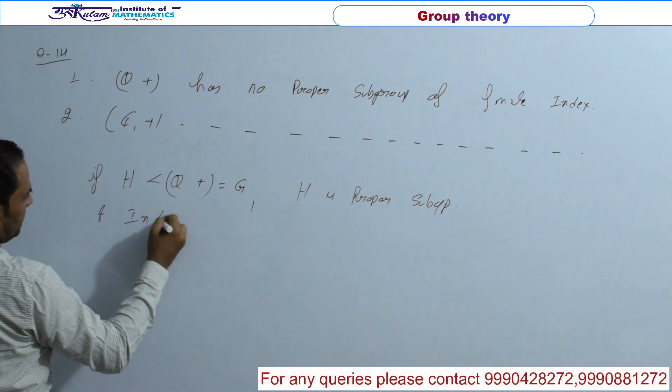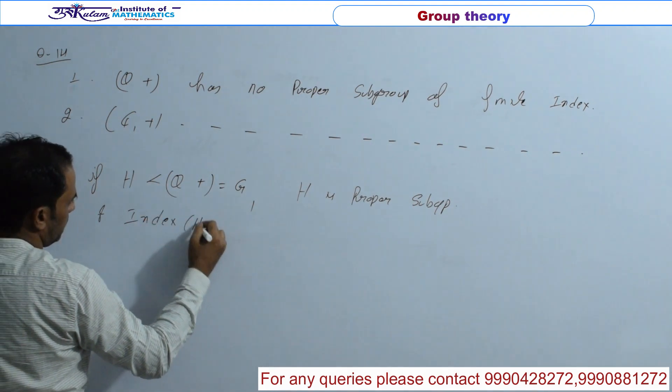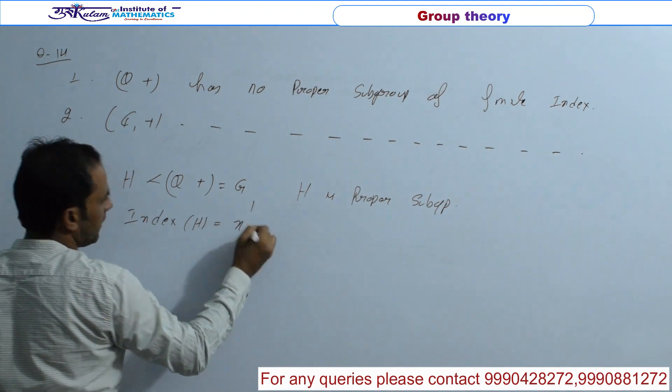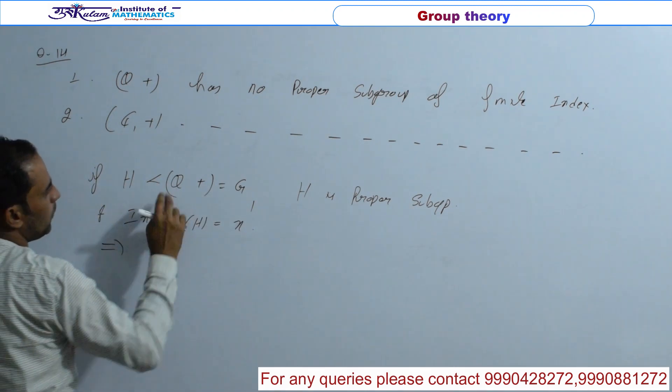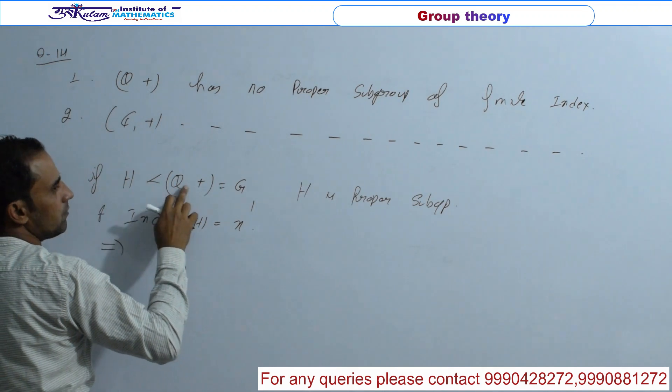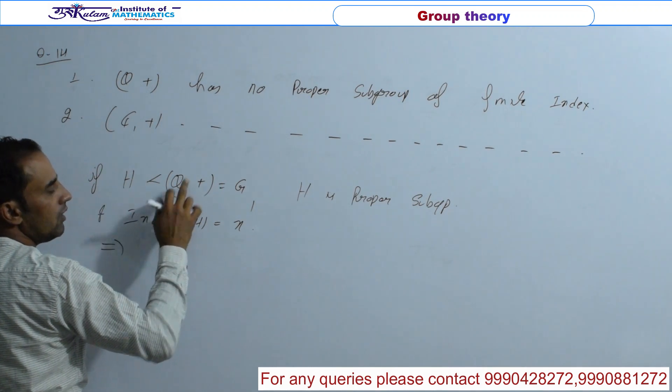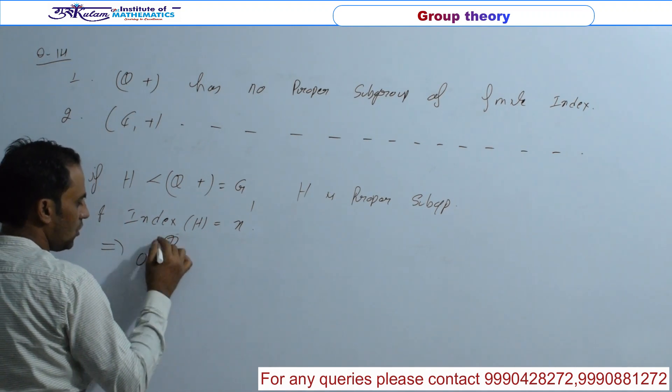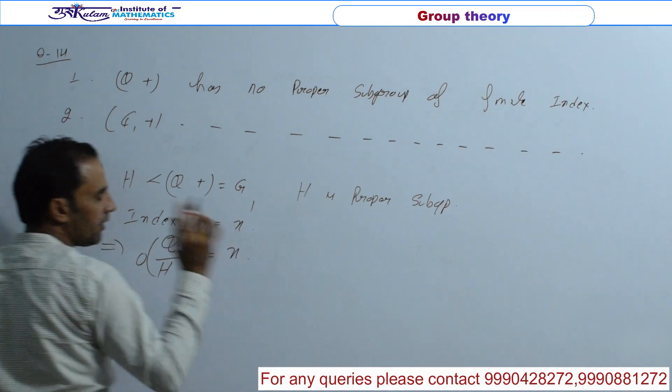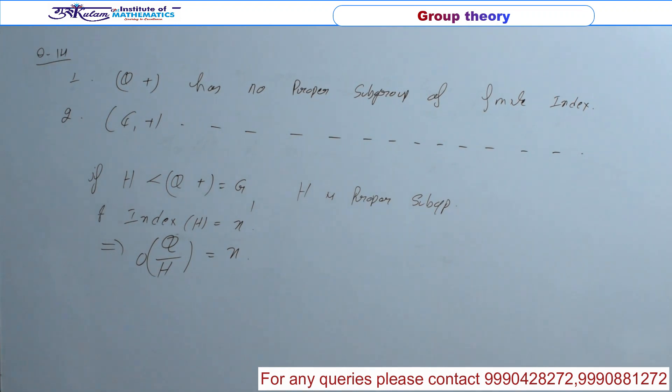And index of H is something N. यानि कि finite index का है. तो definitely Q plus a abelian group है, H अगर इसका subgroup है तो यह normal subgroup बन जाएगा. तो G by H, Q by H define कर सकते हैं. तो इसका order basically आपको क्या दिया हुआ है? यह N order का element है.